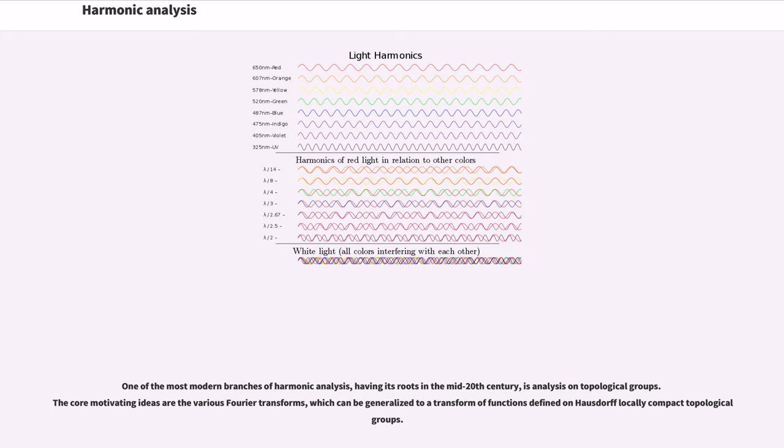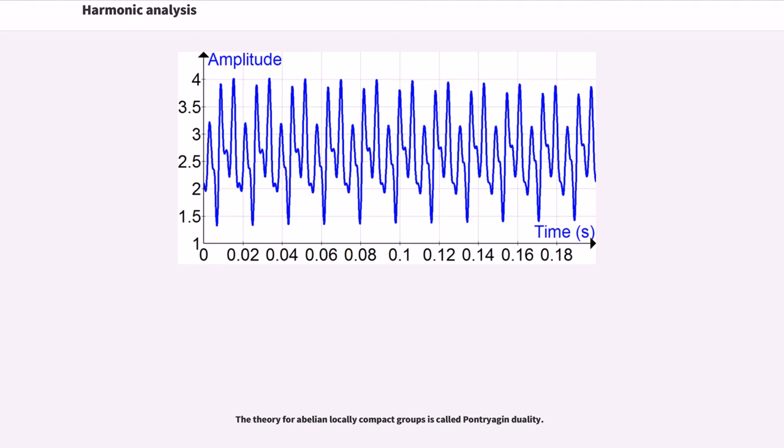One of the most modern branches of harmonic analysis, having its roots in the mid-20th century, is analysis on topological groups. The core motivating ideas are the various Fourier transforms, which can be generalized to a transform of functions defined on Hausdorff locally compact topological groups. The theory for abelian locally compact groups is called Pontryagin duality.